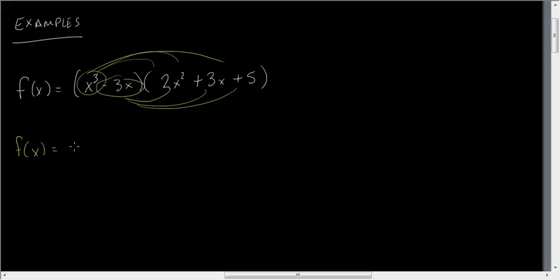So x cubed times 2x squared is 2x to the fifth. x cubed times 3x is a positive 3x to the fourth. x cubed times 5 is 5x cubed. Minus 6x cubed is a negative x cubed.